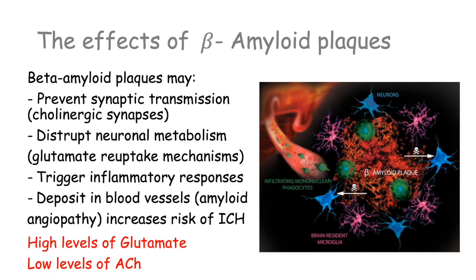These beta-amyloid plaques may come in between neurons — as we can see here, we have neurons in blue and a very large beta-amyloid plaque. This will prevent synaptic transmission, and this is of particular importance in cholinergic synapses, which tend to be the most affected. So in the brain, you end up having low levels of acetylcholine in Alzheimer's.